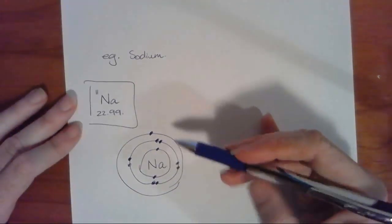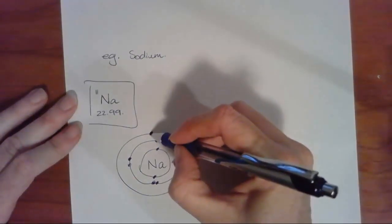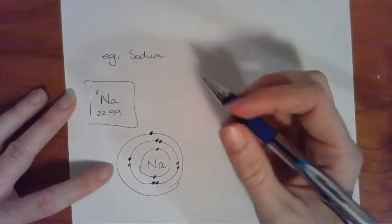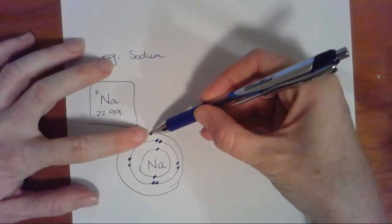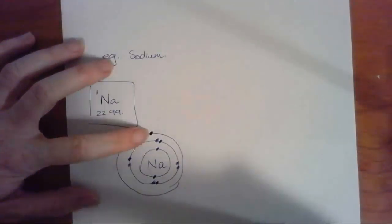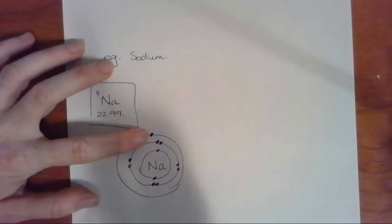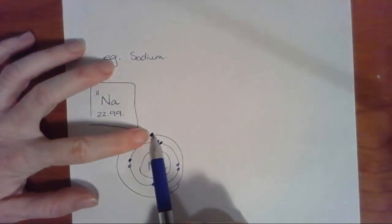So sodium finds it easier to lose one electron, and they find it easier to lose instead of to gain.